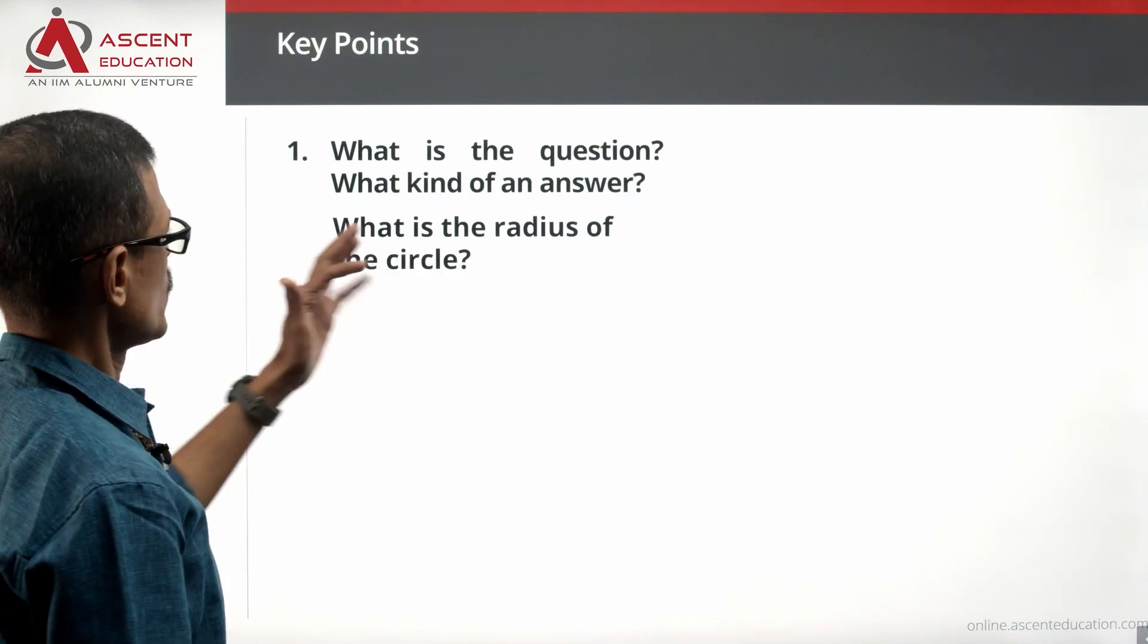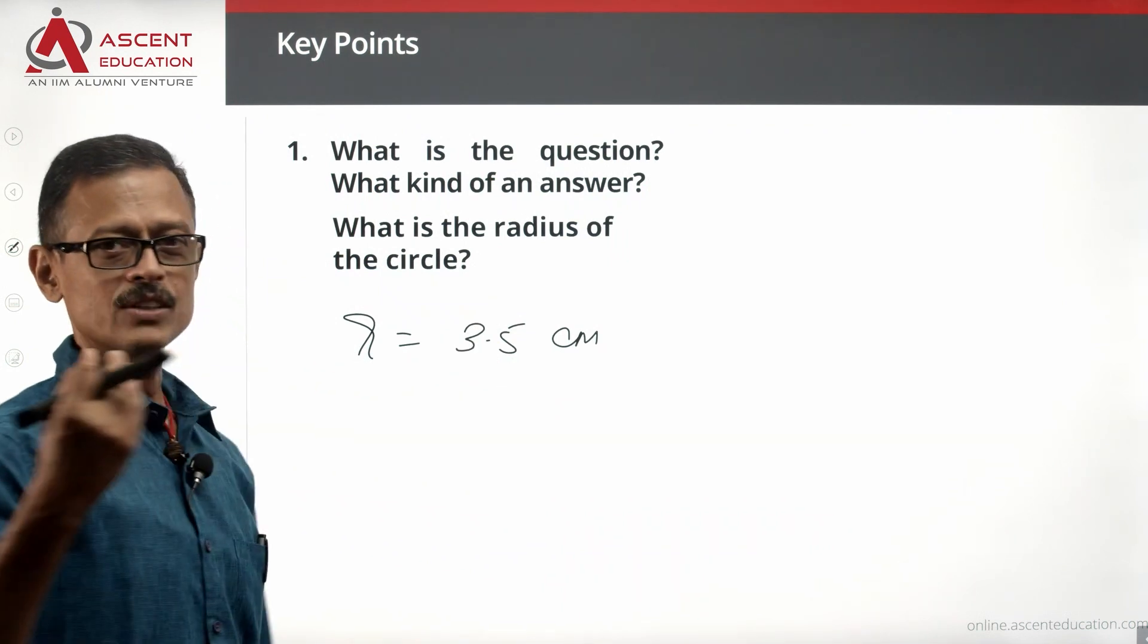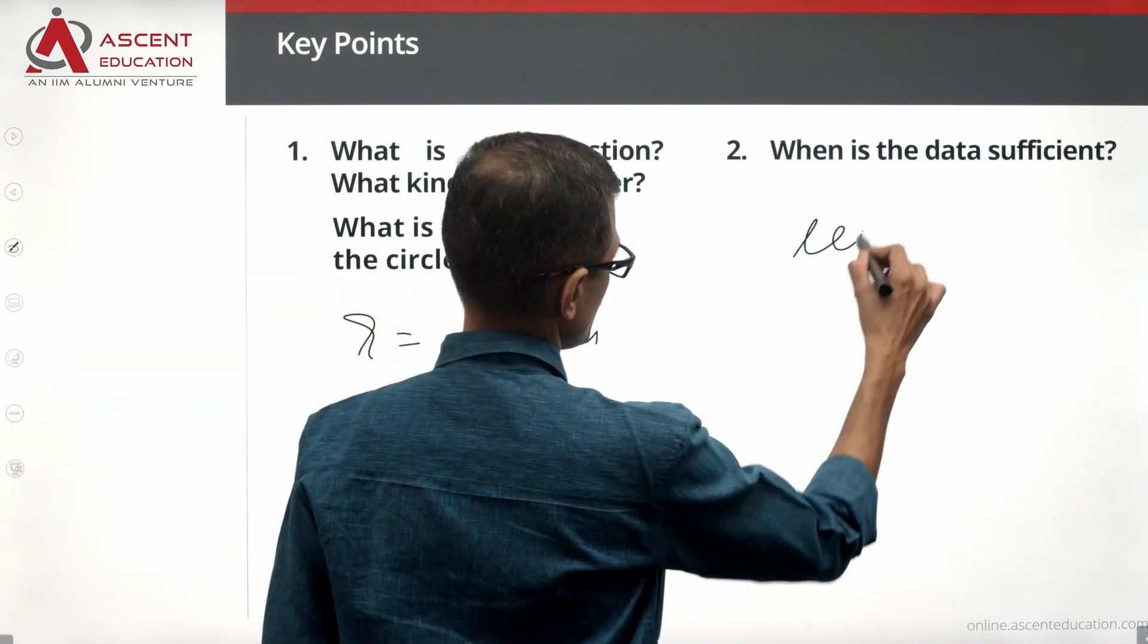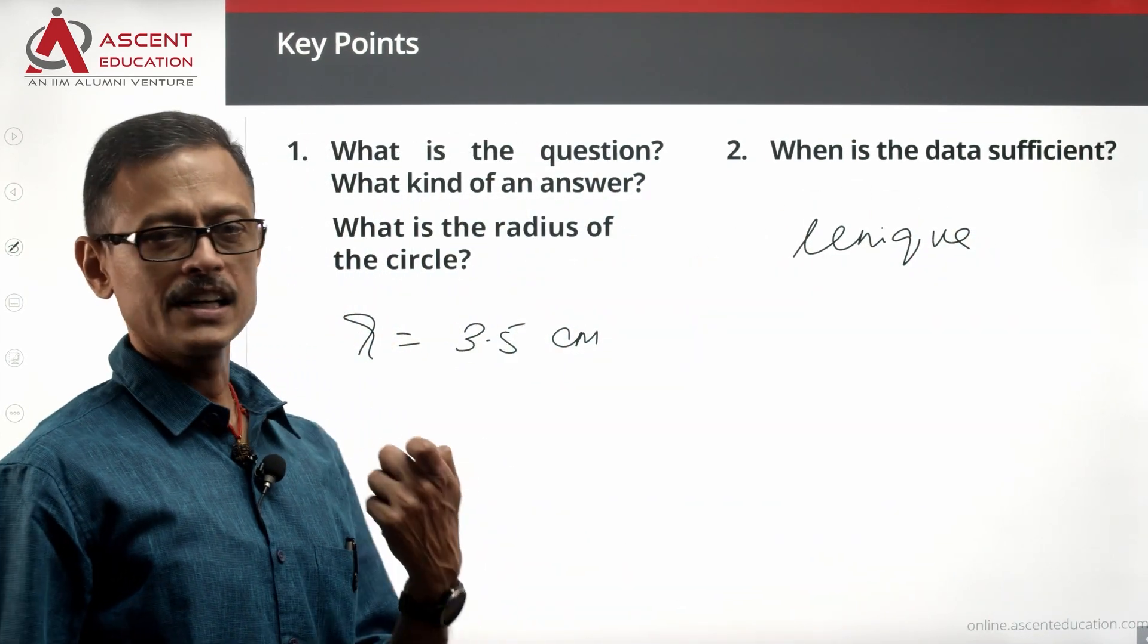What is the question? What is the radius of the circle? The radius of the circle is equal to 3.5 centimeters. When is the data sufficient? The data is sufficient when we have a unique value. Let's see whether we are able to get a unique value.